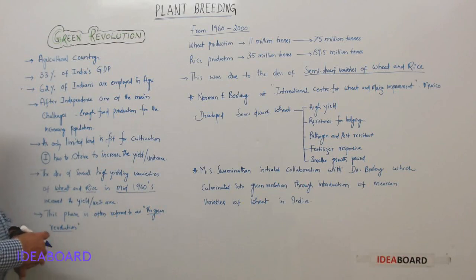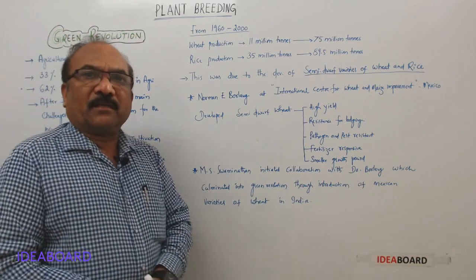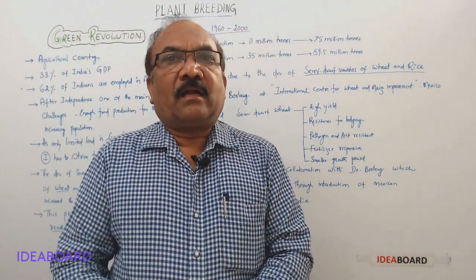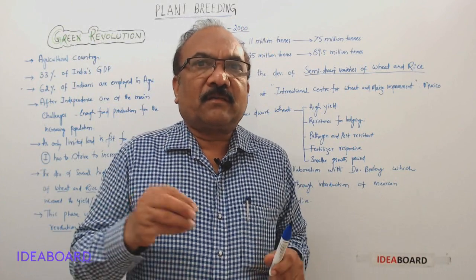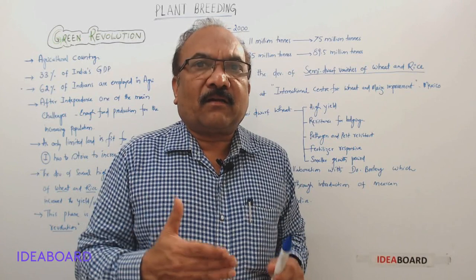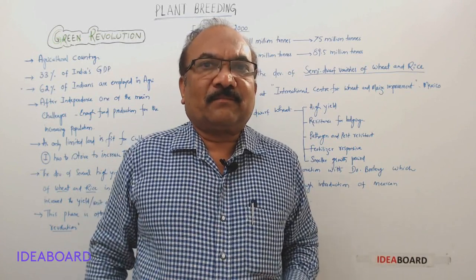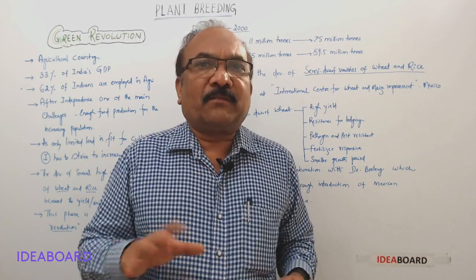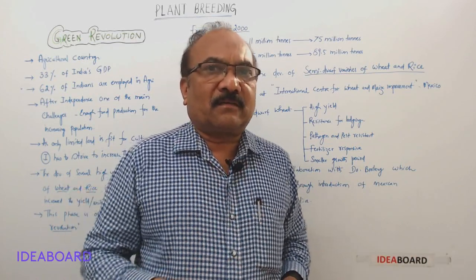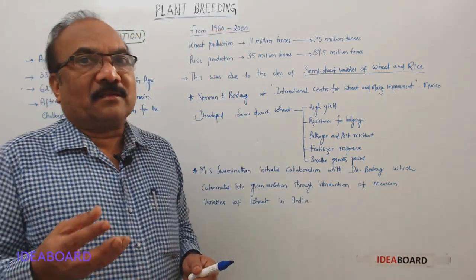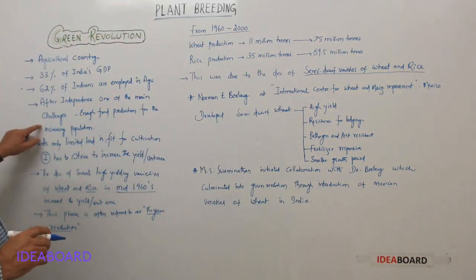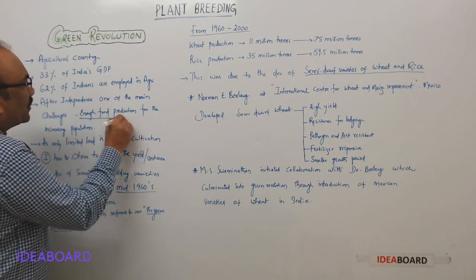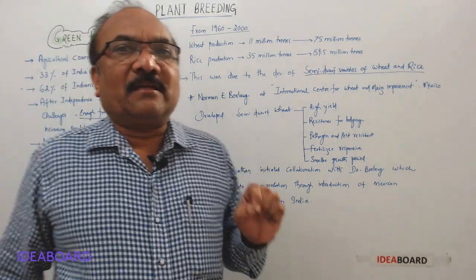Remember the scenario after independence. After independence, we faced many challenges, and one of the main challenges is increased food production — to satisfy the hunger of the increasing population. After independence, the population of India kept increasing, and the demand for food also increased. So that is why we had this challenge of producing enough food for the increasing population.